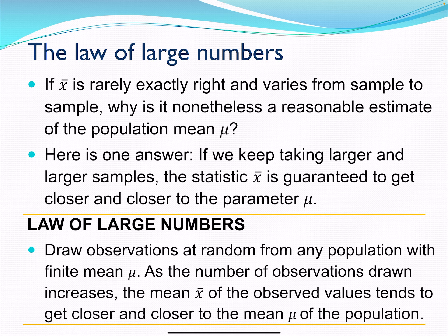Drawing observations at random from any population with a finite mean mu, as the number of observations drawn increases, the mean of our sample tends to get closer and closer to the mean of the population.